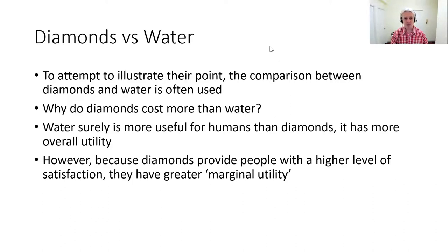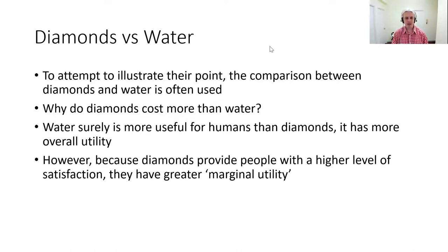One of the points they make is in relation to diamonds and water, a comparison that quite a lot of economic theorists make because water seems like a very useful thing while diamonds seem far less useful. Why do diamonds cost more than water? Diamonds provide people with a higher level of satisfaction, so diamonds have greater marginal utility. Even though water is a more useful commodity, there's so much of it that every additional drop gives us little value, whereas every additional diamond gives us much more value.